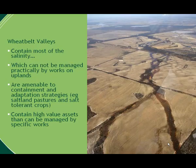Wheat belt valleys. This is a picture of an area in the southeastern wheat belt — a typical valley with an extent of salinity and agricultural land. Wheat belt valleys contain most of the salinity in the wheat belt itself and the areas where most of the risk or hazard is. What we've shown to date is it's very difficult to manage wheat belt valley salinity and valley water tables. They're amenable to systems that contain their extent and are adapted to the significance of salinity.